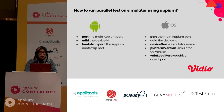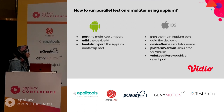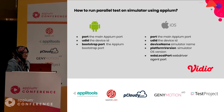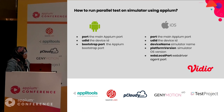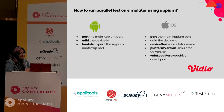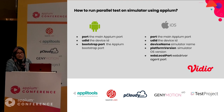So, how do we run parallel tests on simulators using Appium? For Android, we have to use specific capabilities and differentiate the port for three capabilities. For each test case we want to parallelize, we assign a different port. For iOS, there are specific capabilities required: we have to specify the device name, platform version, and also the web driver agent local port.